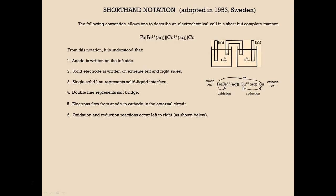Oxidation and reduction reactions occur left to right. So for example, here's the oxidation going from iron to iron 2 plus, that's the oxidation. And then here we have reduction going from copper ion being reduced to solid copper.